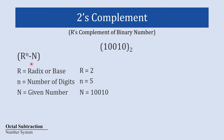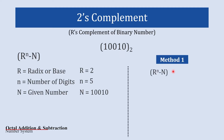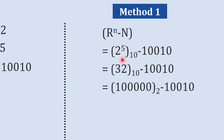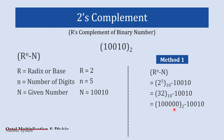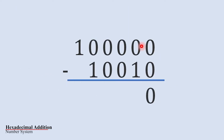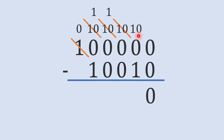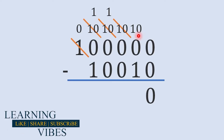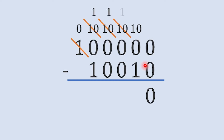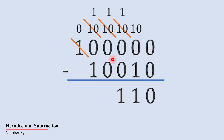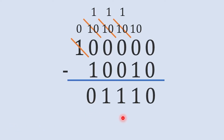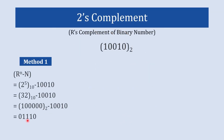Method 1 uses this equation. Placing all values: 2 raised to 5 is 32, which in binary is 1 0 0 0 0 0. We subtract 1 0 0 1 0 from this. Performing the subtraction with borrows: 1 0 minus 1 is 1, 0 minus 1 is 1, 0 minus 1 is 1, 1 minus 1 is 0. The result is 0 1 1 1 0, and this is the 2's complement of the binary number — but this method is time-consuming.